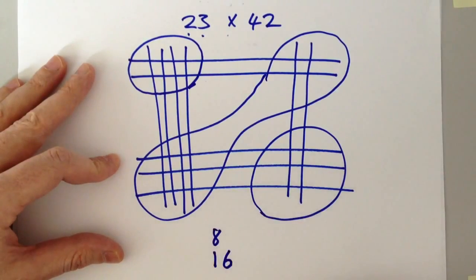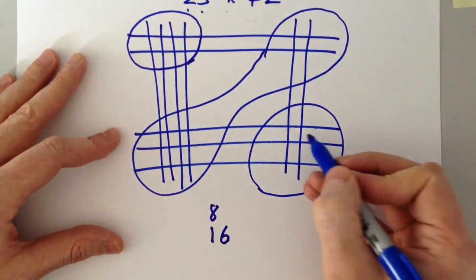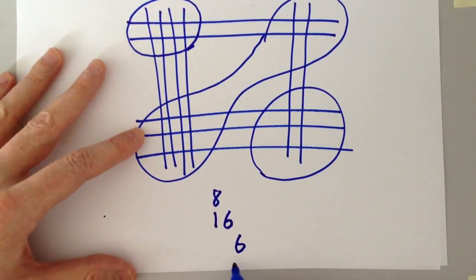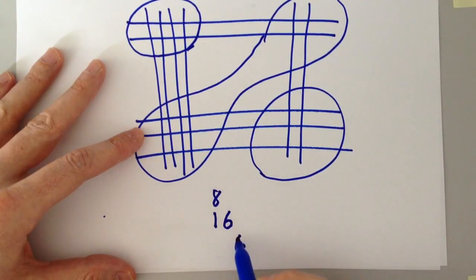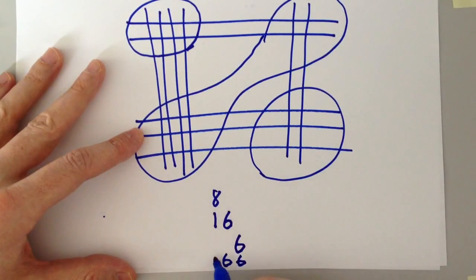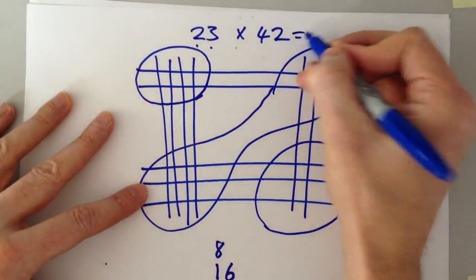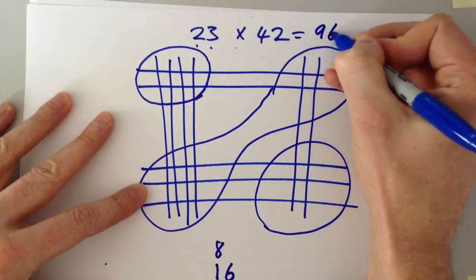We're going diagonally down. The final group here is six, which we write in the next diagonal iteration. So we have six plus six plus the nine. Eight and one is nine. So the answer for 23 times 42 is 966.